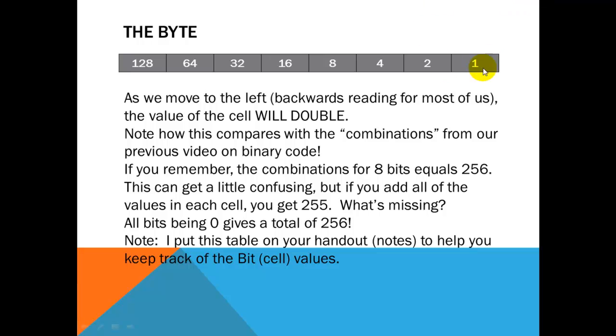Now, going back to the powers of 2, and remember we move to the left. We start at the right, we move to the left. The value of the cell will double. And again, you have this on your notes and you want to keep track of that to help you out. Note how this compares with the combinations from our previous video on binary code. If you remember, the combinations for 8 bits equals 256. So, let's stop here and look at this. We start off on the far right. 1, 1 times 2 is 2. 2 times 2 is 4. 4 times 2 is 8. 8 times 2 is 16. 16 times 2 is 32. 32 times 2 is 64. And 64 times 2 is 128.